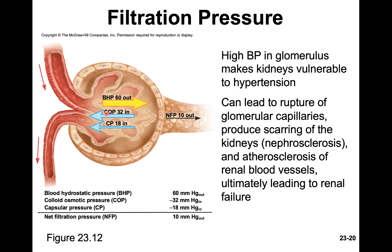The other pressure is the COP — colloid osmotic pressure. This is the idea that large proteins cannot filter out of the glomerulus. Since water always follows a high solute concentration, and proteins stay in the glomerulus, water from the capsular space wants to move into the glomerulus to be with those proteins. That is colloid osmotic pressure — the pressure of water pushing onto the glomerulus to enter it and join the high concentration of proteins left behind.